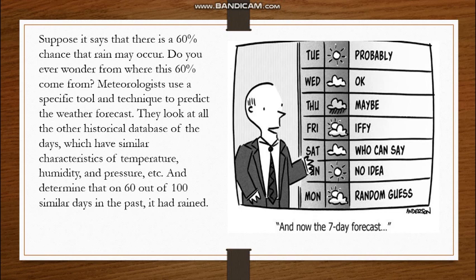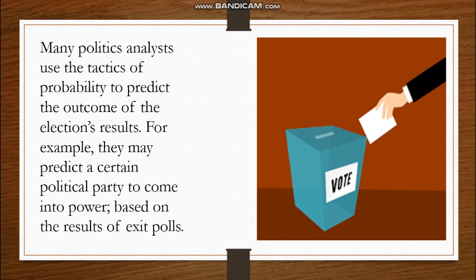Weather forecasting is a major use of probability. On your cell phone, you can see things like '60% rain chances' or '50% rain chances.' Meteorologists have a proper backend database which predicts that if it is very cloudy, how will it affect the day. If conditions match certain criteria, a specific rain probability is assigned. Similarly, in June and July, data is used to predict heat strokes because it is known to be warm during those months.